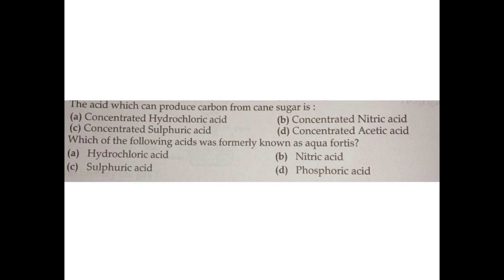Question number five: the acid which can produce carbon from cane sugar is — A) concentrated hydrochloric acid, B) concentrated nitric acid, C) concentrated sulfuric acid, D) concentrated acetic acid. The correct answer is option C: concentrated sulfuric acid.